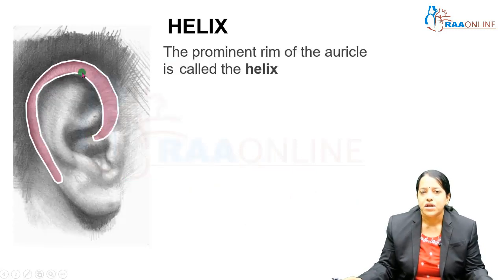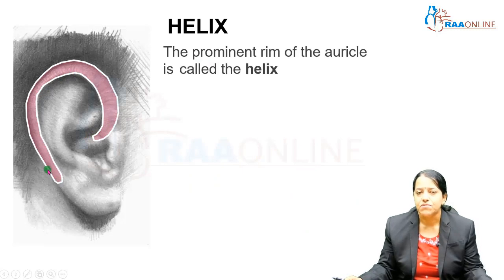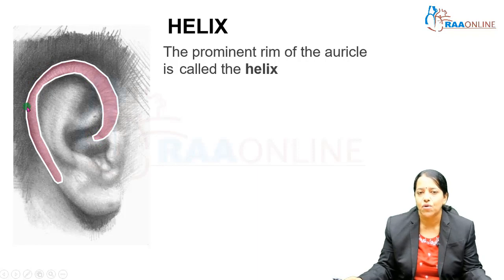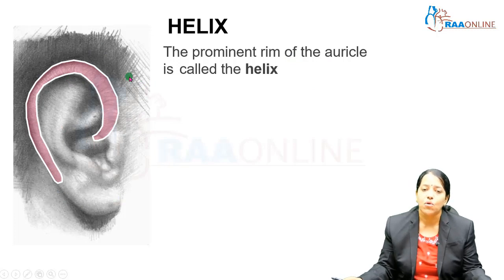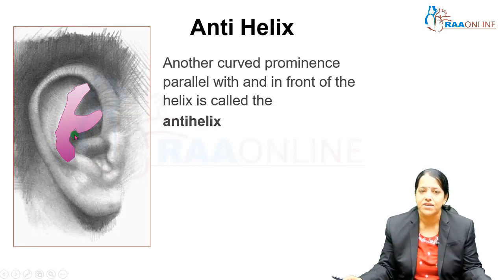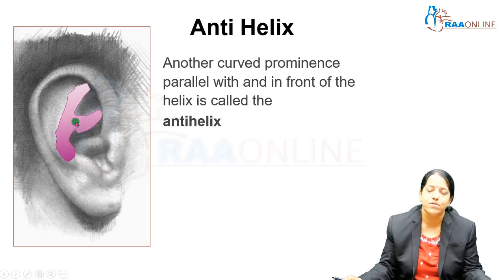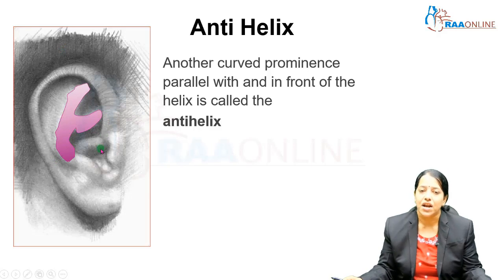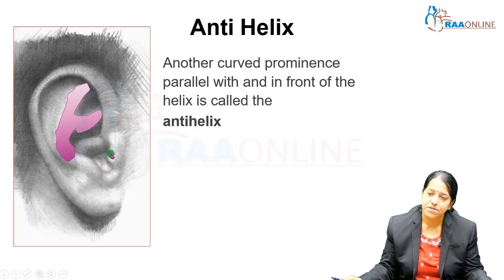You can see over here the curved part of the pinna, which starts from the medial aspect and goes all around — this is called the helix. This is the prominent rim of the auricle. The pinna is also called the auricle. Just below the helix you can see another curved portion, and this is called the anti-helix. The anti-helix helps the sound waves to get reflected correctly within the external auditory meatus.